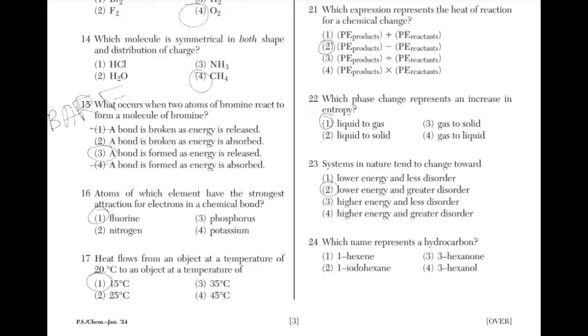Which name represents a hydrocarbon? A hydrocarbon is only made up of carbon and hydrogen. Answer choice 1 is the only compound made up of these two elements.